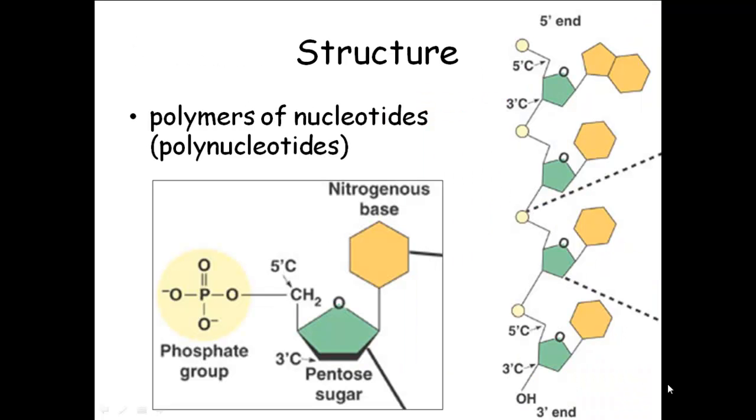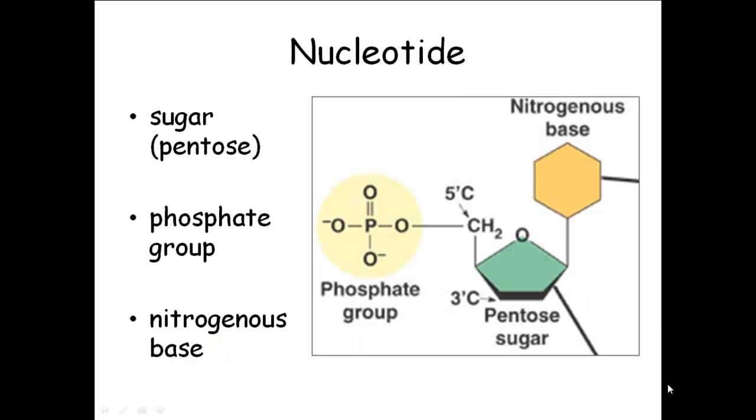A nucleotide has three different parts. The first thing it has is a sugar molecule, and this is a pentose sugar. Pentose means there are five carbons in the sugar. The sugars we've been talking about, the monosaccharides like glucose, galactose, and fructose, those are hexose sugars. They've got six carbons. This is a little bit different. These are pentose sugars.